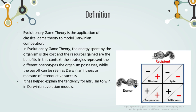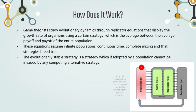Looking at this graph, we can see that altruism, while negative for the donor, benefits the recipient. Cooperation benefits both parties, selfishness benefits only the donor, and spite benefits no parties. In terms of the mechanics, game theorists study evolutionary dynamics through replicator equations that display the growth rate of organisms using a certain strategy, which is the average between the average payoff and the payoff of the entire population.